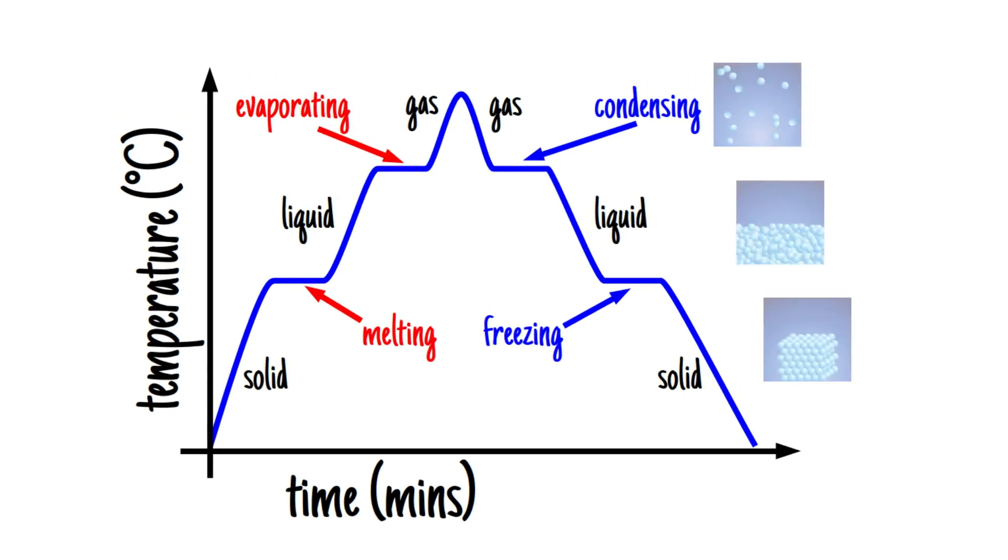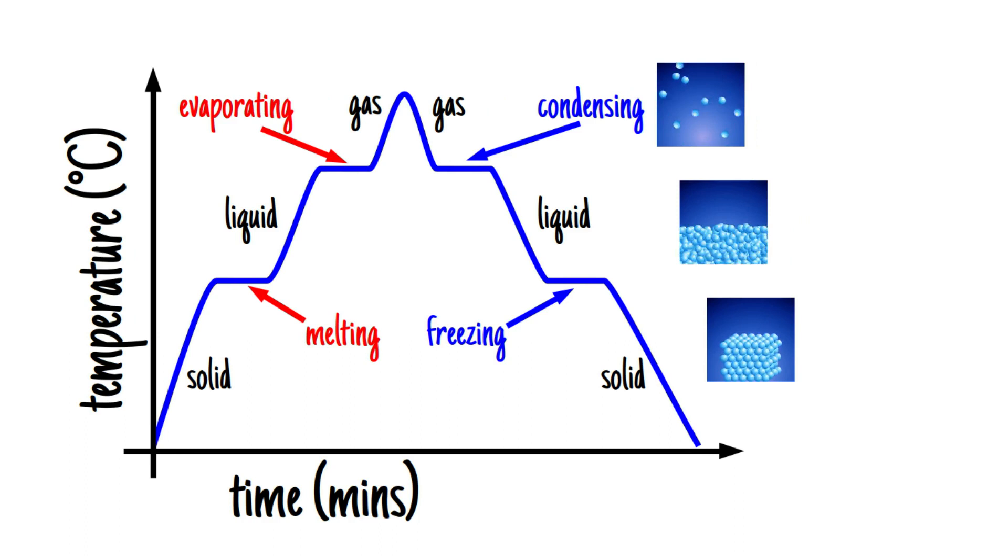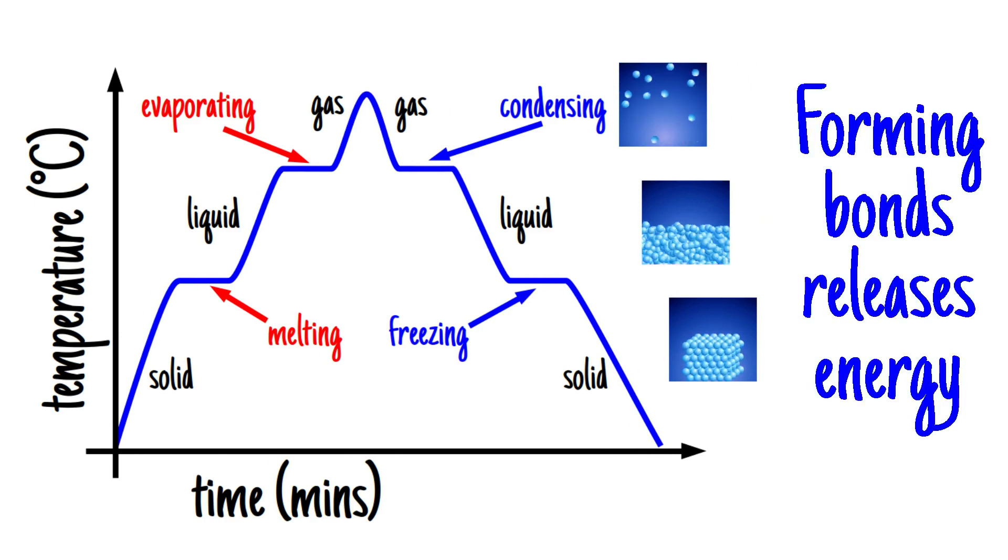On this diagram I've labelled the states and the state changes. Here's the particle model diagrams too just for completeness. The graph remains horizontal for changes of state as we cool our substance because bonds are being reformed. And forming bonds releases energy, helping to maintain the temperature. So even though the temperature has been dropping, as those bonds form it holds that temperature constant for a while by releasing some more energy.